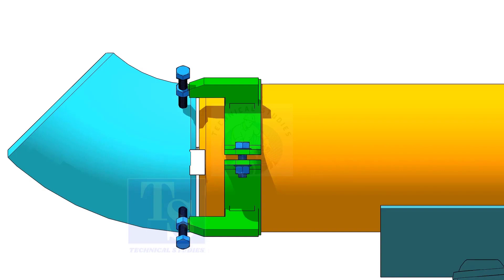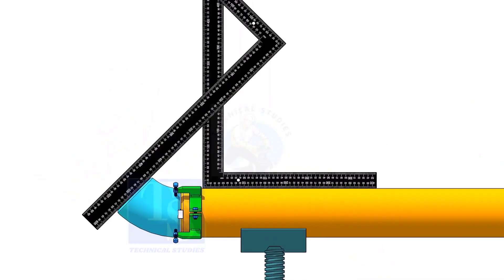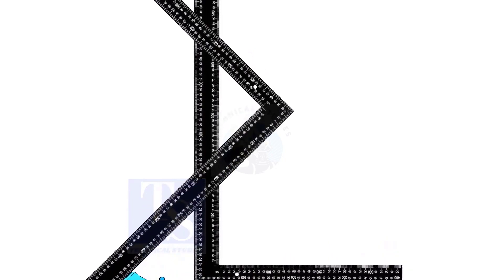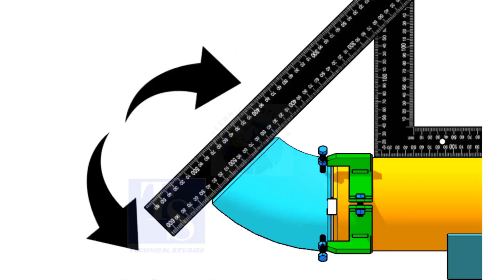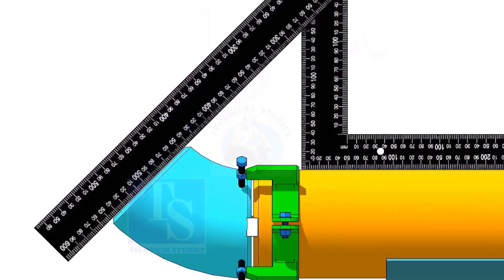Hold a large right angle on the top of the pipe. Hold another right angle on the face of the elbow, as shown. If required, rotate the elbow to make the distance equal. Tack weld on the top and bottom of the joint.